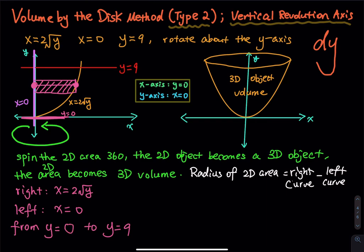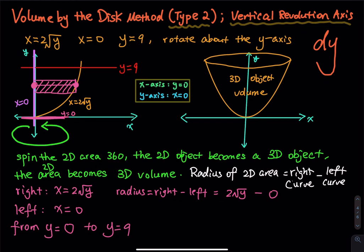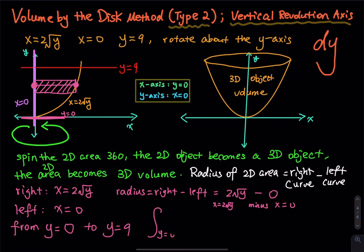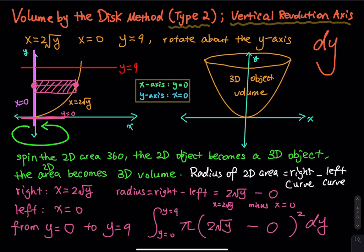The radius equals the right curve minus the left curve: r = 2√y − 0. Do not skip the zero. Then the volume integral is: V = ∫ from y=0 to y=9 of π·r² dy, where r = 2√y − 0. This is the set-up — do not evaluate.